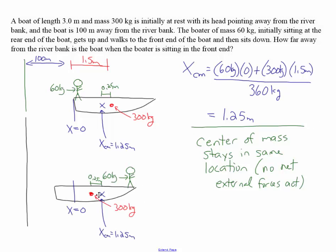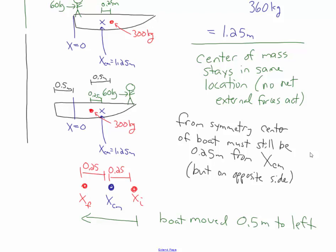Now that the man is in the front of the boat, the center of the boat shifted to the left, the man moved to the right, but the center of mass is still at x equals 1.25 meters. The assumption is that the boat is uniform and symmetric on both sides. So the center of mass of the system still needs to be 0.25 meters away from the center of the boat, but on the opposite side — still in between the man and the center of the boat. The center of the boat was 0.25 meters to the right of the center of mass, and now it's 0.25 meters to the left of the center of mass.